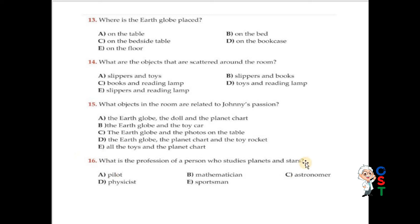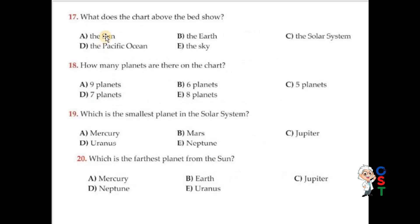Question number 16: What is the profession of a person who studies planets and stars? Options are pilot, mathematician, astronomer, physicist, and sportsman. Astronomer — C is correct. Question number 17: What does the chart above the bed show? The solar system. C is correct. Question number 18: How many planets are there on the chart? The options are 9, 6, 5, 7, and 8. There are 8 planets. E is correct.